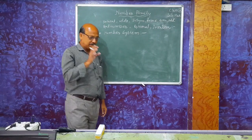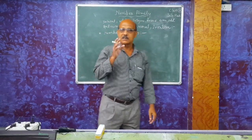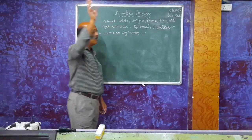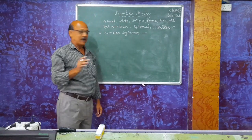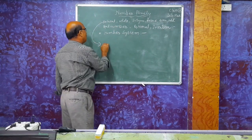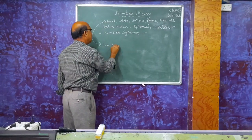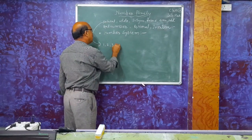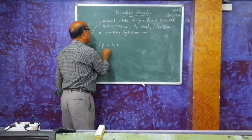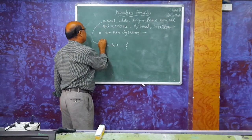We are going to study the number system, which starts from 1 to infinity — 1, 2, 3, 4, and so on — and these are known as natural numbers.